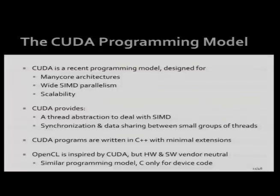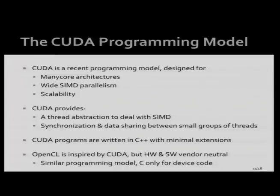CUDA came out at the end of 2006, designed for NVIDIA many-core architectures with lots of SIMD. It's designed to help you write scalable parallel programs that run on processors ranging from very small to very large, using a thread abstraction to deal with parallelism and SIMD. You write scalar threads that are mapped onto SIMD lanes, which are mapped onto the array of cores. OpenCL is another programming model inspired by CUDA but hardware and software vendor neutral — Tim Mattson here in the audience was on the committee that created OpenCL.